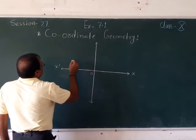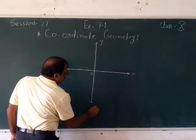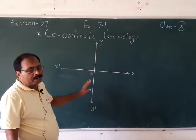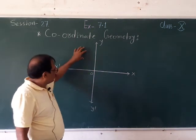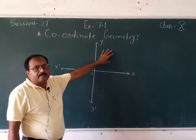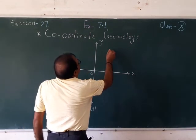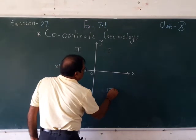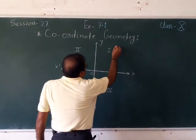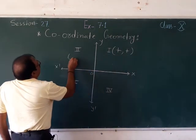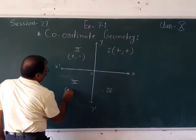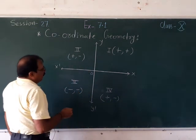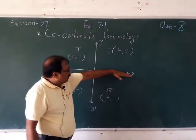Here we have the x-axis and the y-axis. As you are aware, when in a plane you take two perpendicular lines, you have four parts — first, second, third, and fourth. So the first part is known as the first quadrant, this is the second quadrant, this is the third quadrant, and this is the fourth quadrant. In the first quadrant, the sign is positive. The second quadrant is plus and minus. The third quadrant is minus and minus. The fourth quadrant is plus and minus.